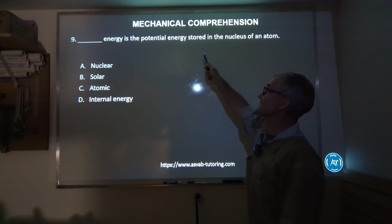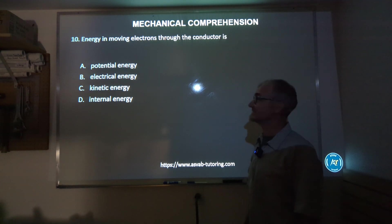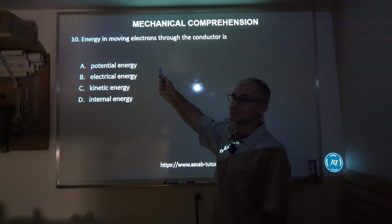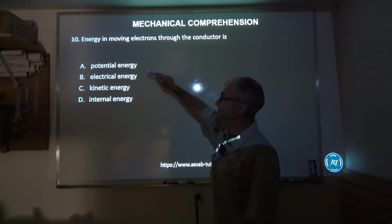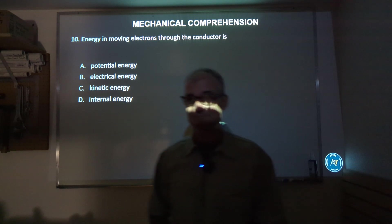Number 10, about halfway there, or we are halfway there when we're done with this. Energy is moving electrons through the conductor, very similar to the last problem, vocabulary question. Potential energy, electrical energy, kinetic, or internal? Well, we're talking about electrons, so it has to be electrical energy. Correct answer for number 10 is B.